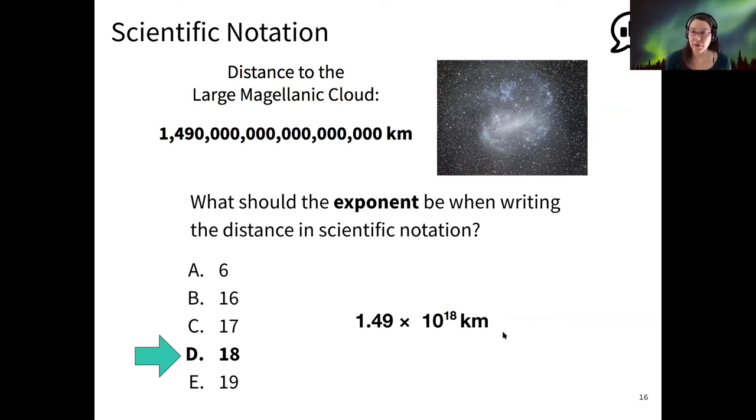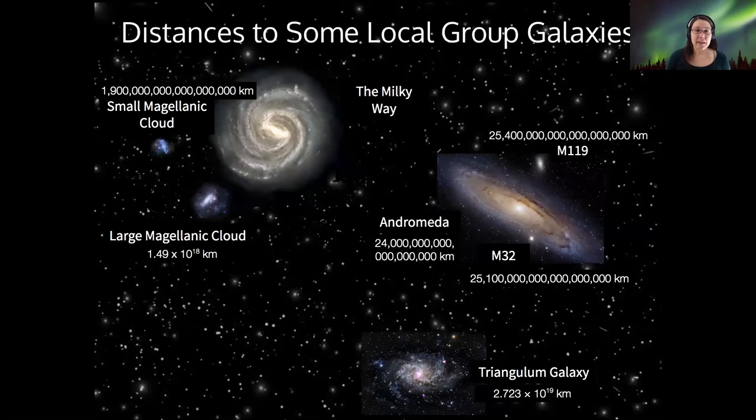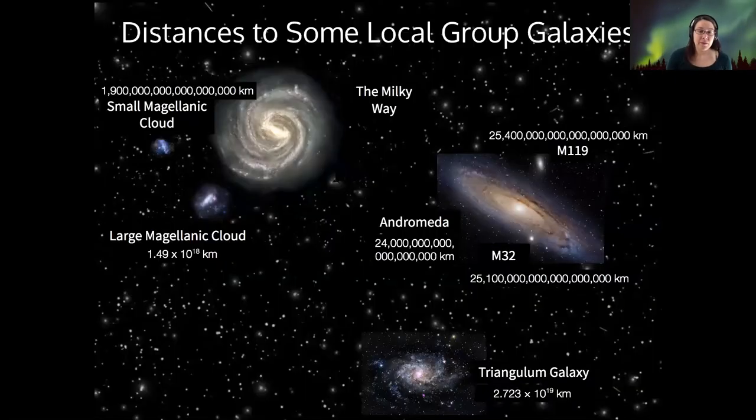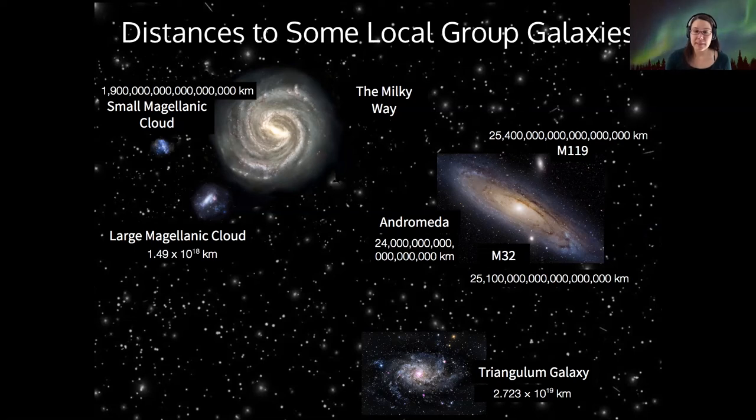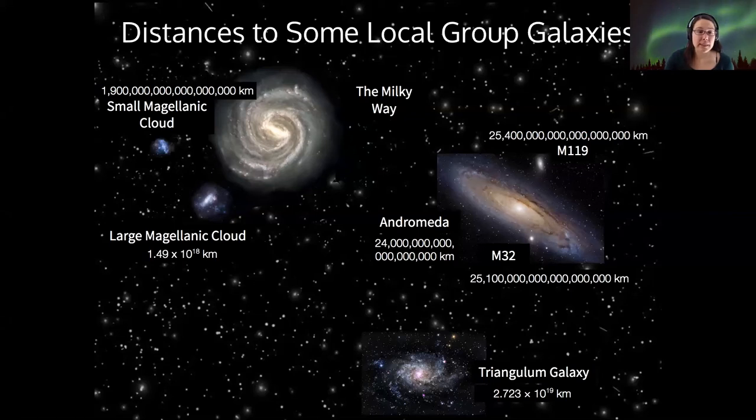So here's again all of our distances to galaxies in the local group. And we've added our Large Magellanic Cloud and we had before our Triangulum Galaxy. So now we can see very clearly, instead of looking at all these zeros, it's now really easy to pick out which one of these is the larger number.